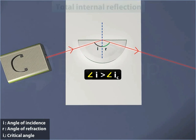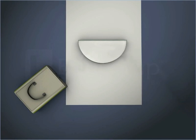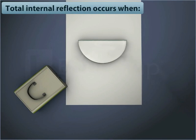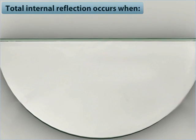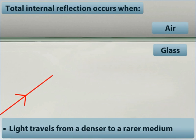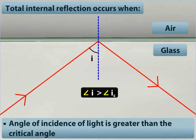This phenomenon is called total internal reflection. From this activity, we can say total internal reflection occurs when light travels from a denser to a rarer medium, and the angle of incidence of light is greater than the critical angle.